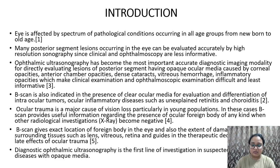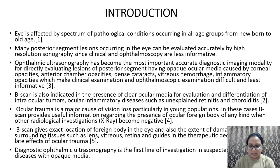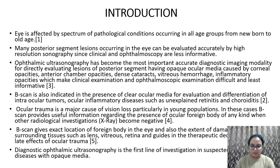Ocular trauma is a major cause of vision loss, particularly in the young population. In these cases, B-scan provides useful information regarding the presence of ocular foreign body of any kind when other radiological investigations are negative. B-scan gives the exact location of the foreign body and the extent of damage to surrounding tissues such as vitreous, lens, and retina, guiding therapeutic decisions in late effects of ocular trauma.